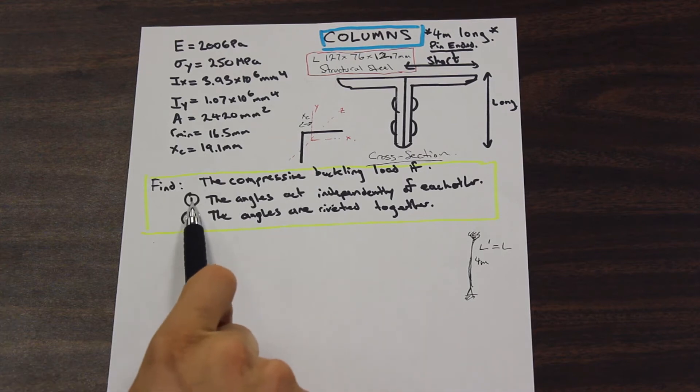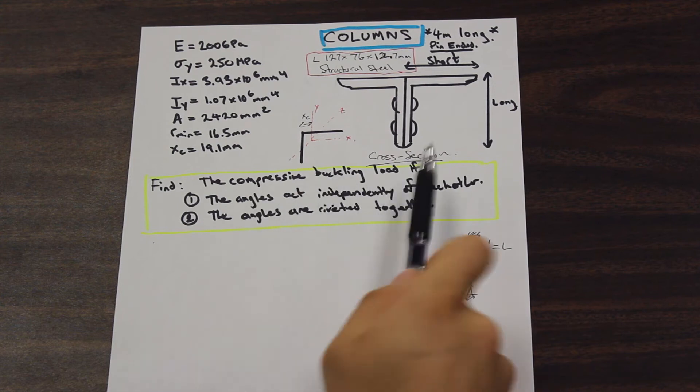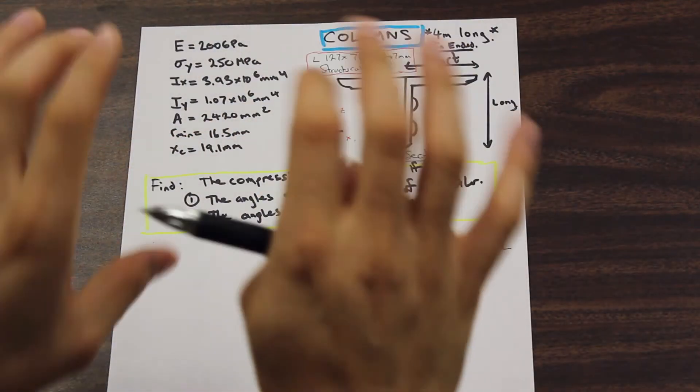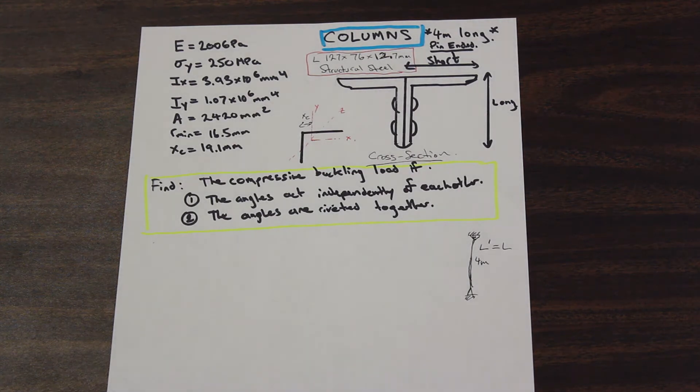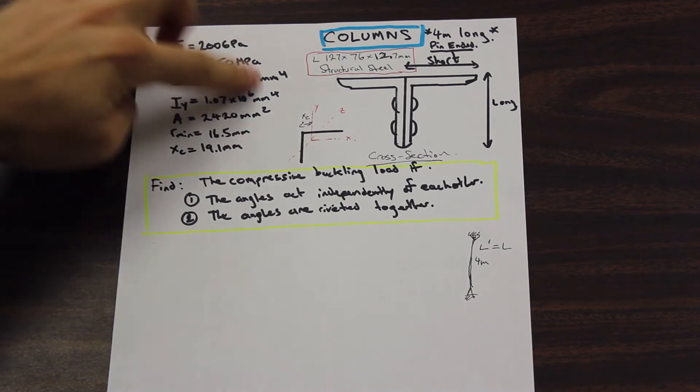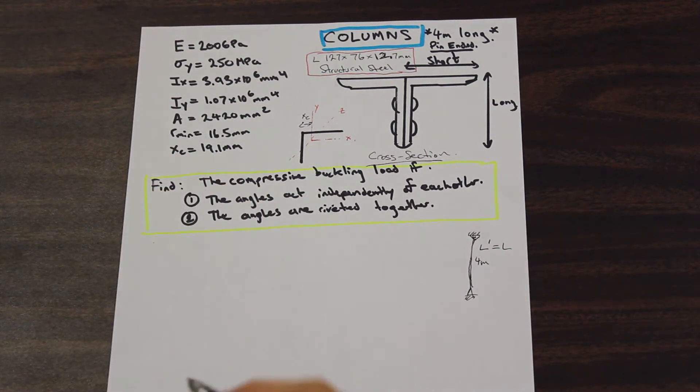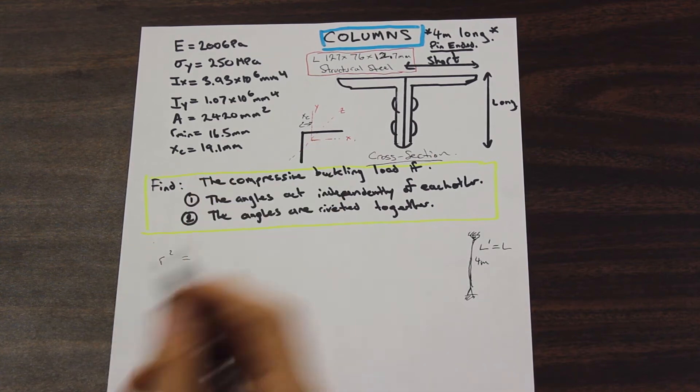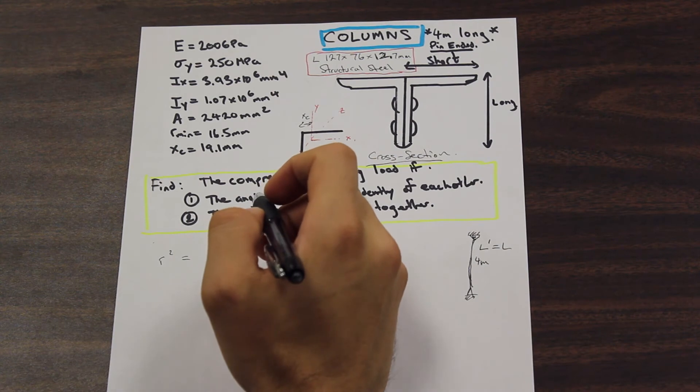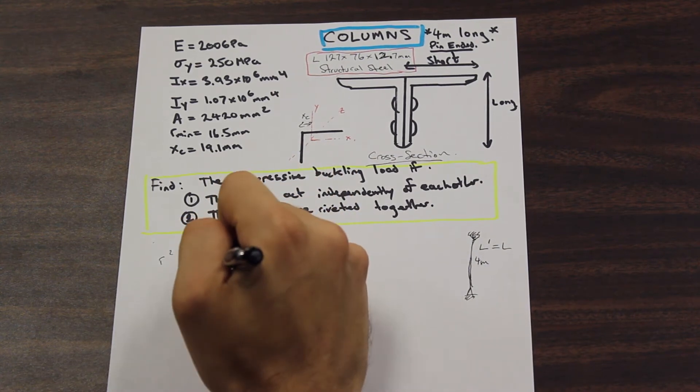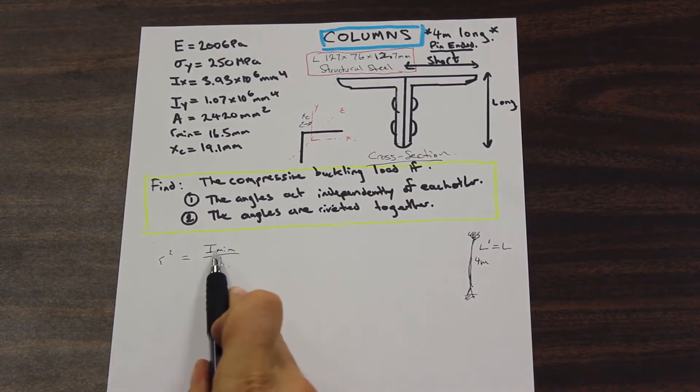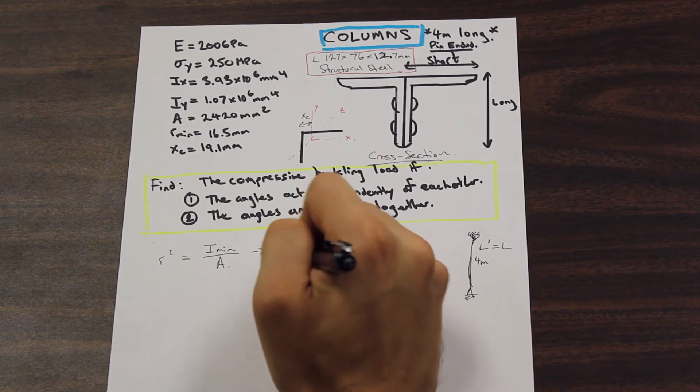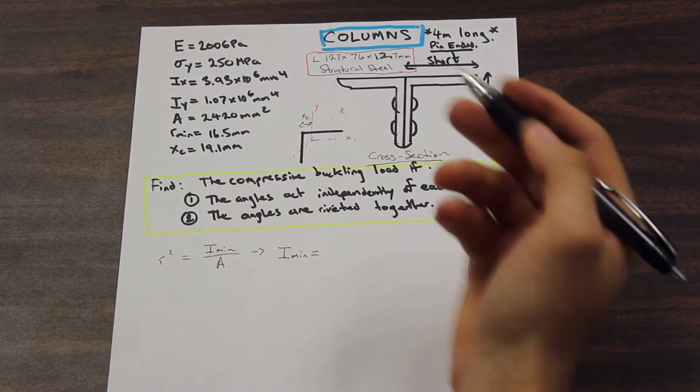And so solving for the first part of the question, we want to find the compressive buckling load, or the critical compressive buckling load, if the angles act independently of each other. So we're going to assume that we just have two separate angles, and they're just two pieces. So we can use directly, then, the information given to us on the table, and at the end, we can just multiply by two. So let's begin. So we need to find first our minimum moment of inertia. So we're going to use that, the formula here for the radius of gyration.